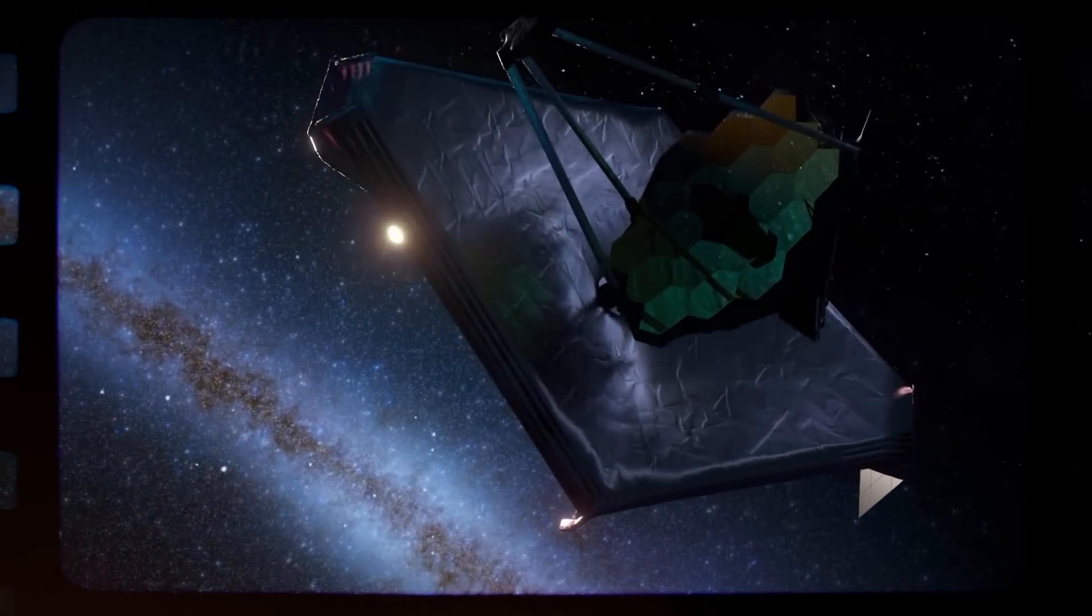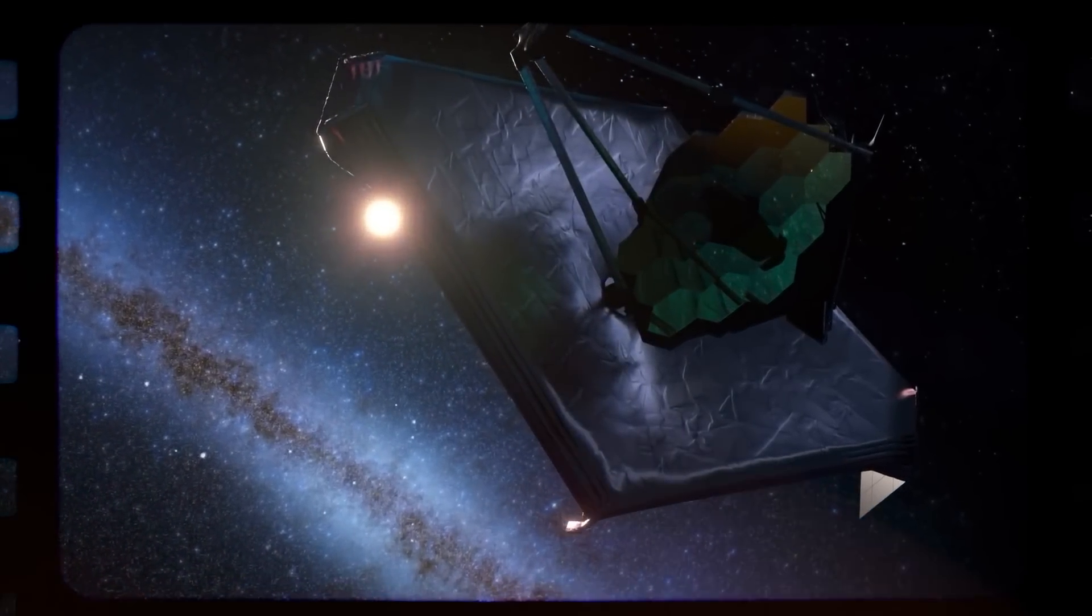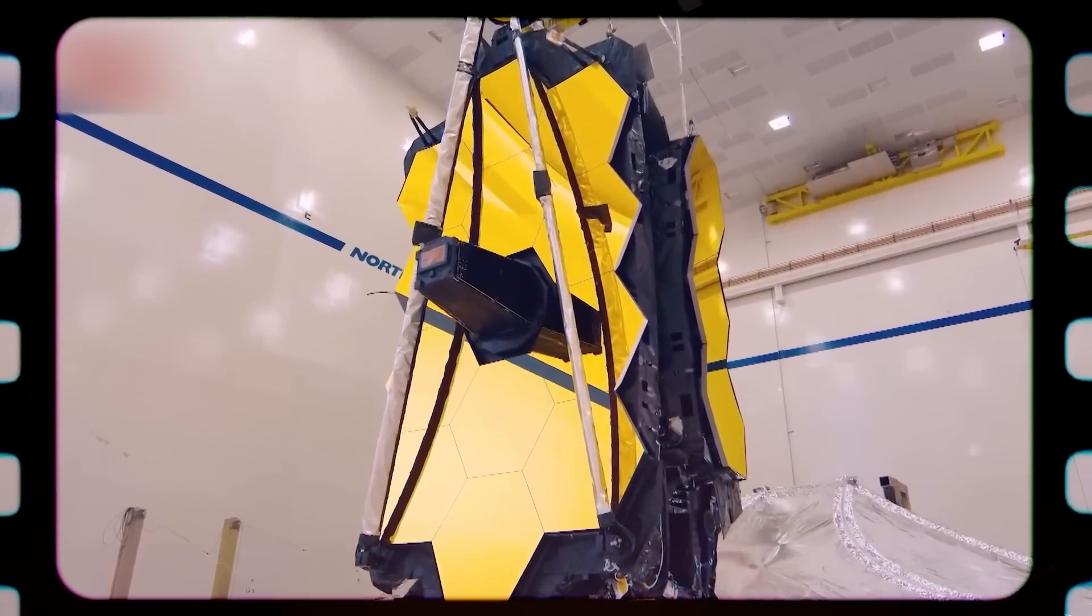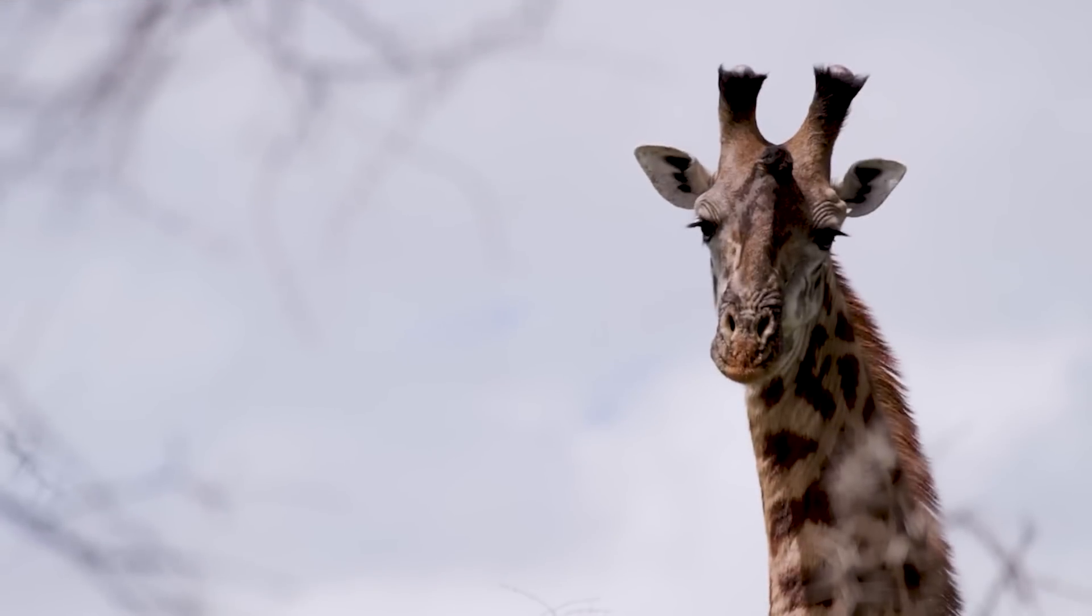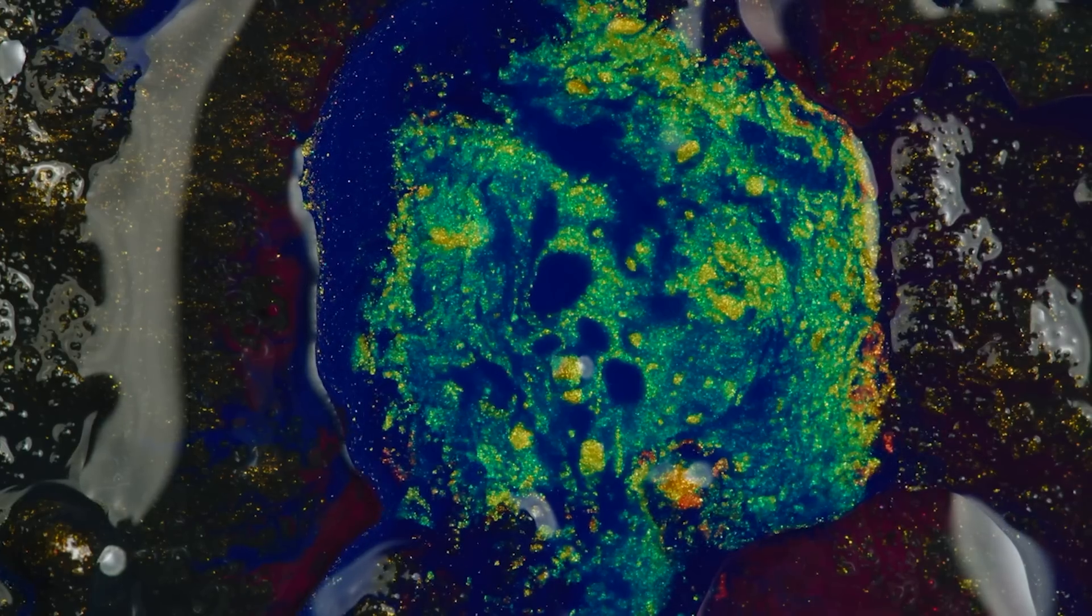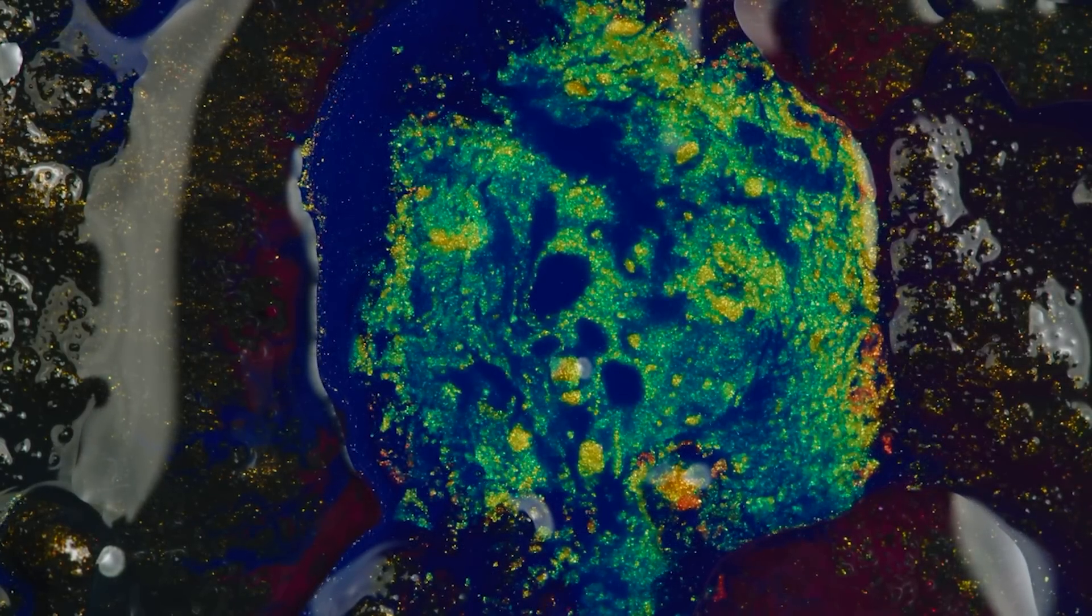NASA's James Webb Telescope travels about one million miles from Earth to orbit the Sun around a stable point. A tennis court-sized sunshield shields its enormous gold-coated primary mirror, which is as tall as a giraffe, and provides unrivaled vistas of the universe in infrared light.